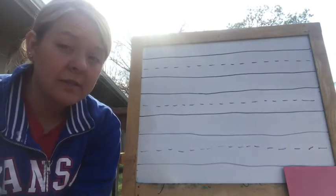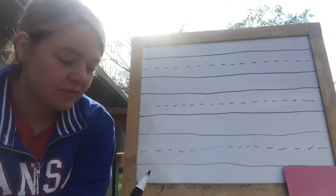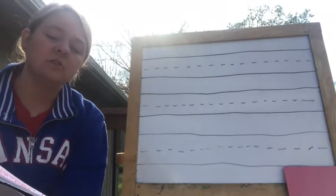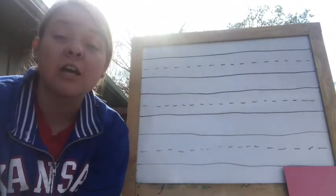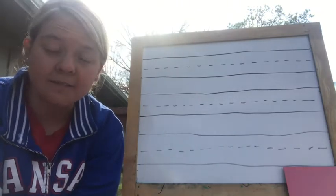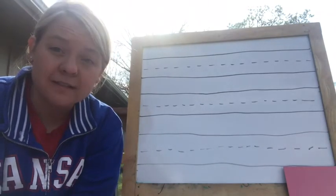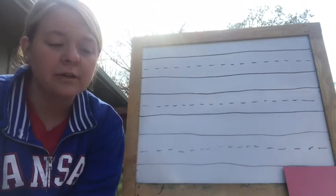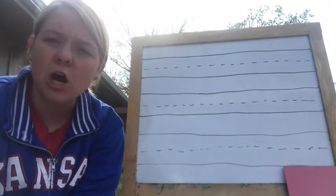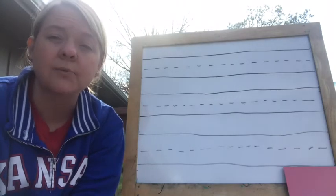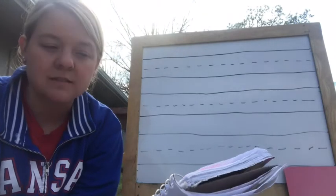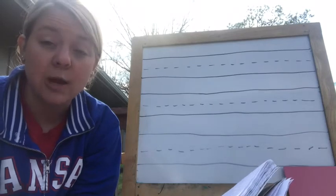Some words that start with that sound are Jack. Used in a sentence, you could say Jack is such a great friend. Another word that starts with the Juh sound is Jake. Jake is my best friend. Another word that starts with the Juh sound is journey. We went on a long journey around the lake. Our last word is jackrabbit. The jackrabbit jumps very high.